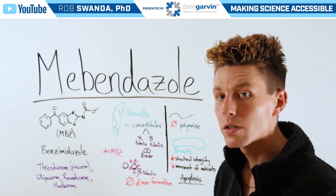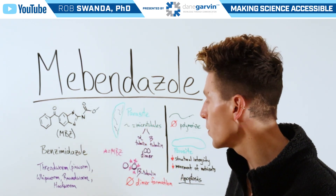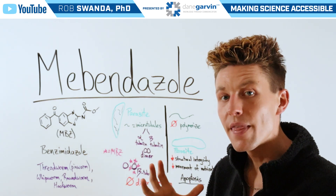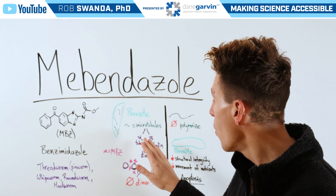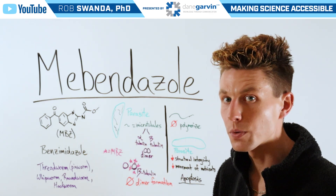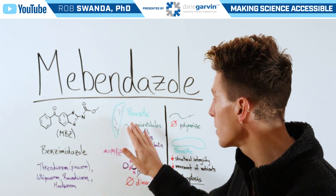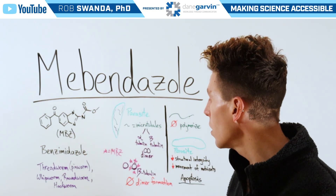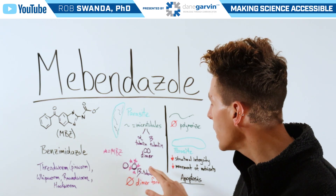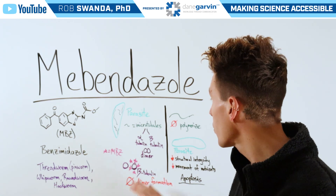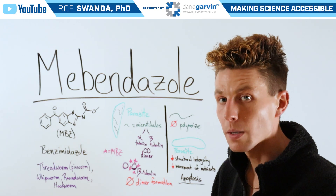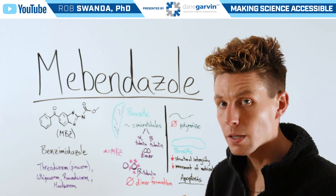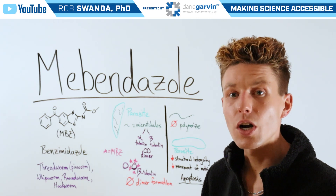Mebendazole targets a specific component of those microtubules. Microtubules are composed of both alpha tubulin and beta tubulin that come together to form dimers, and once those dimers polymerize into microtubule chains they help with structural support as well as transportation of nutrients around the parasite. Mebendazole blocks beta tubulin from forming dimers, so those microtubules cannot polymerize and therefore cannot exert their function.